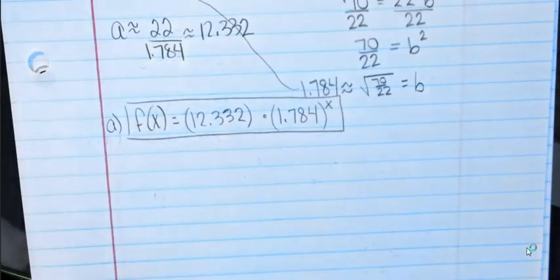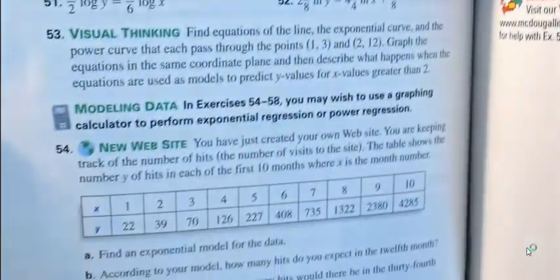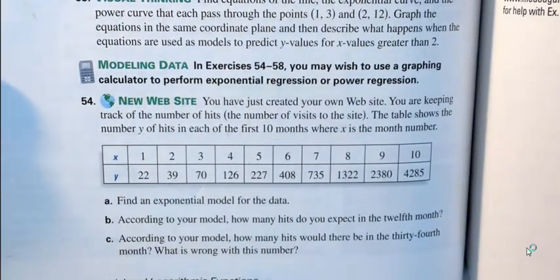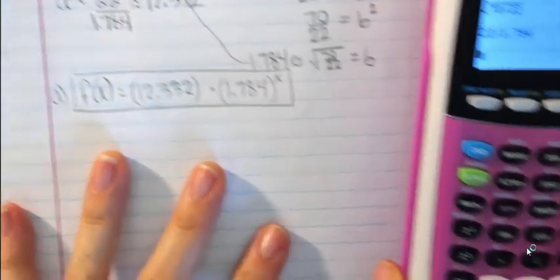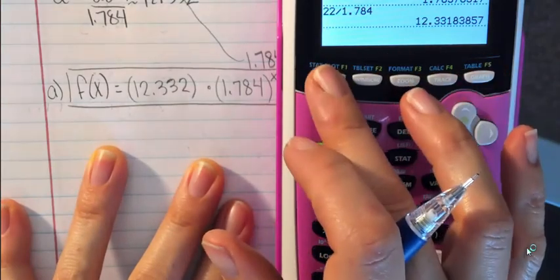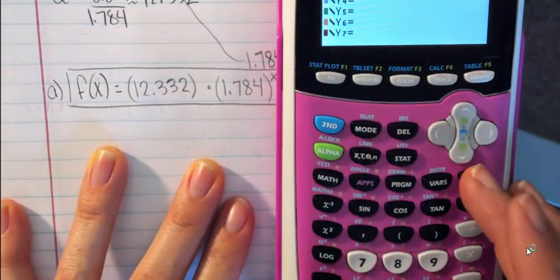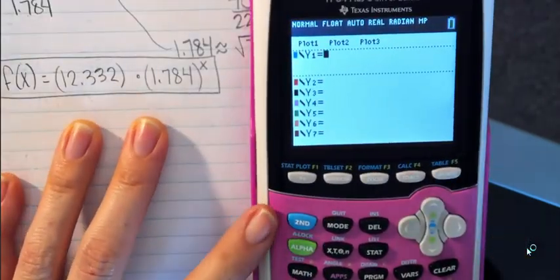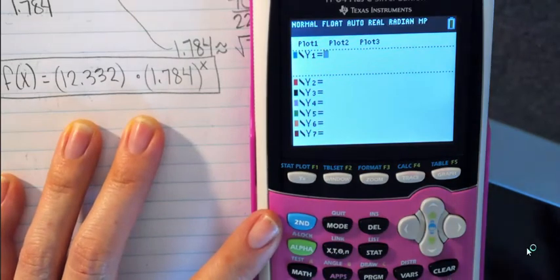For part B, according to your model, how many hits do you expect in the 12th month? I'll put this equation into my graphing calculator. I can also double-check to make sure it looks like an actual exponential function.